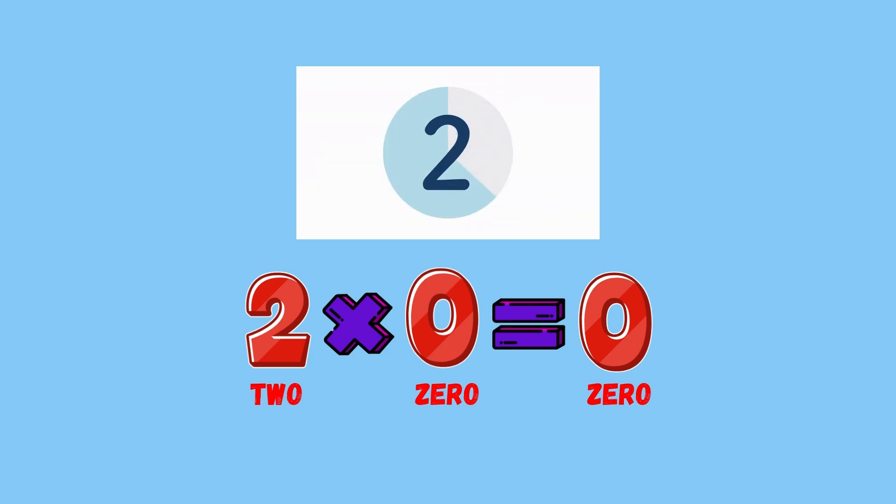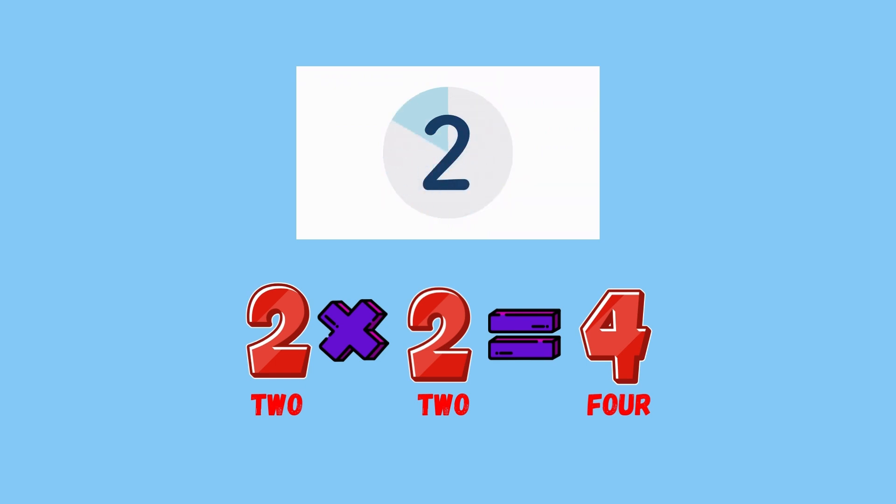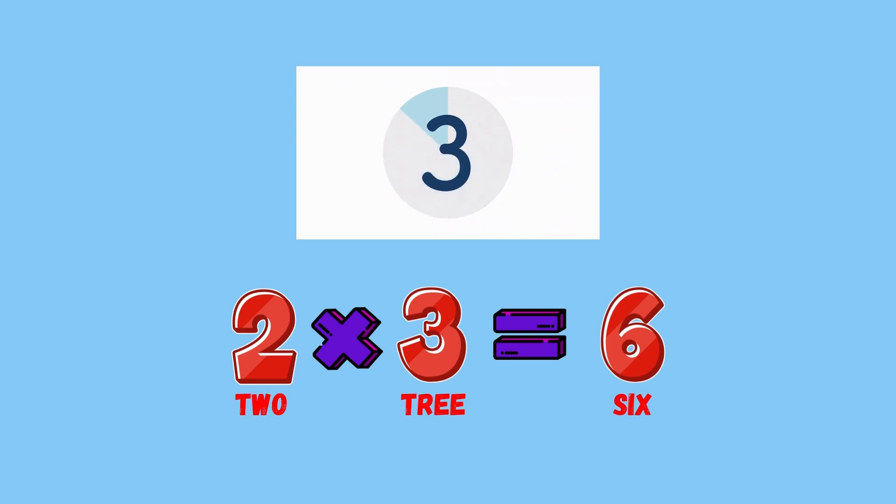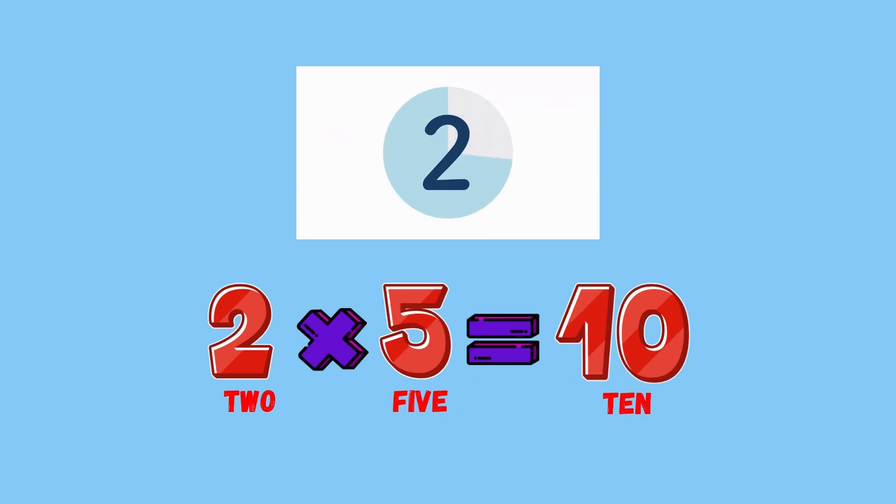Two times zero is what, friends? Zero, good job! Two times one is what? Who remembers? Two, good! Two times four equals what, friends? Four, good job! Two times three equals what, friends? Six, good job! Two times four is what? Who remembers? Eight, good job! Two times five is what? Who knows? Ten, good!